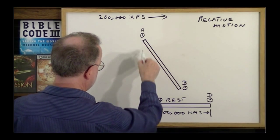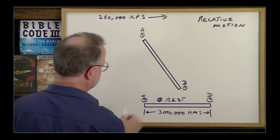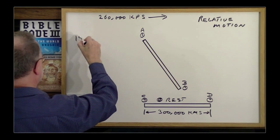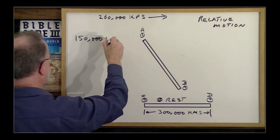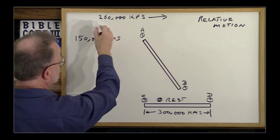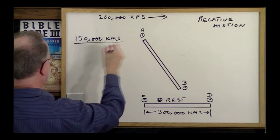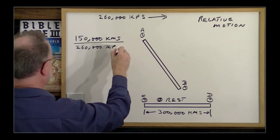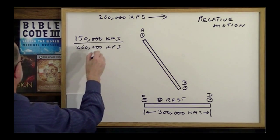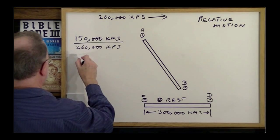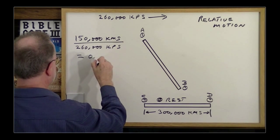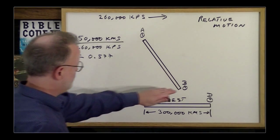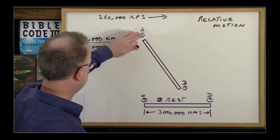Then it moves over until A is lined up with C, so we've moved a complete distance of 150,000 kilometers and did so at that speed.